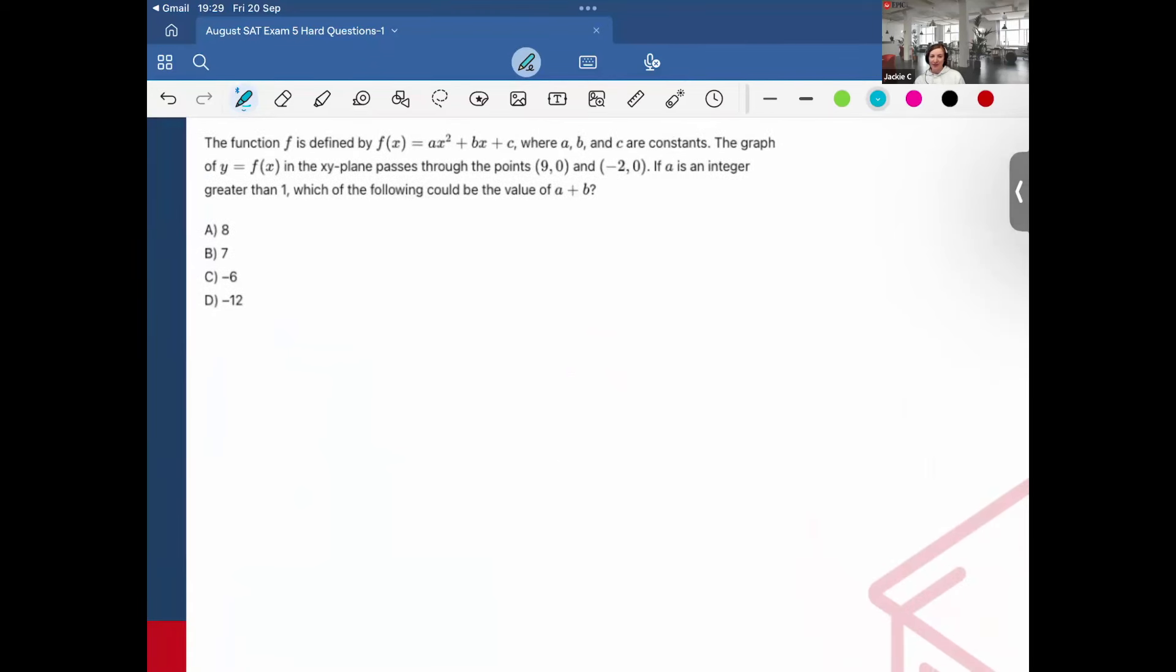This one here, I've also seen very similar ones on Blue Book exam 5 or 6. Some students reported that they had this question, very similar, on the exam. The function f is defined by f of x equals ax squared plus bx plus c, where a, b, and c are constants. The graph of y equals f of x in the xy plane passes through the points (9, 0) and (-2, 0). If a is an integer greater than 1, which of the following could be the value of a plus b?